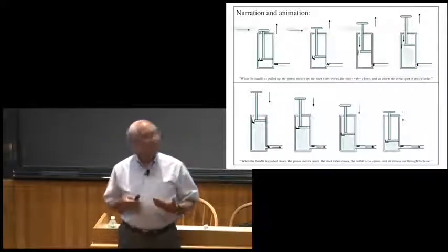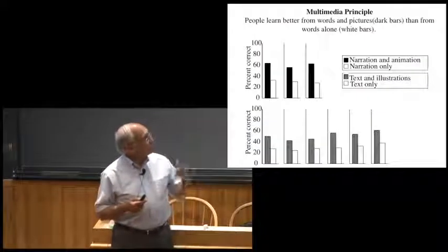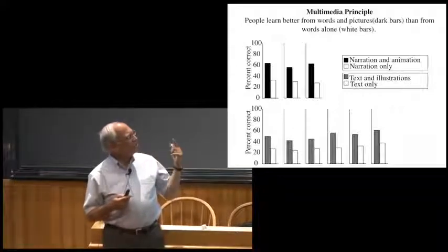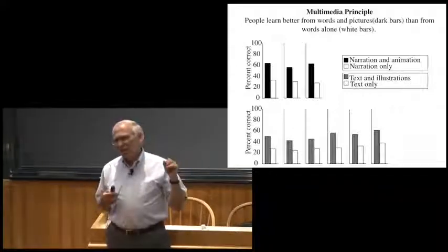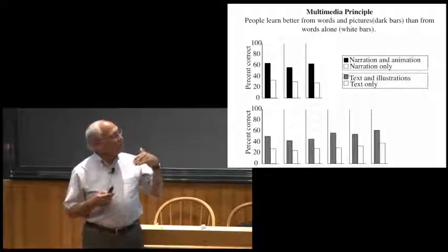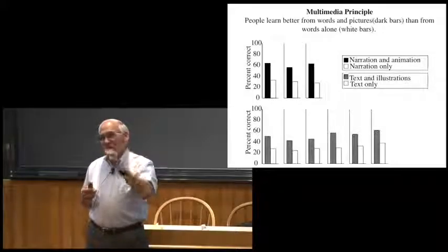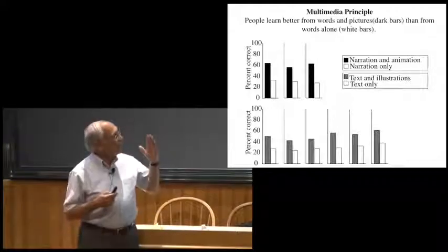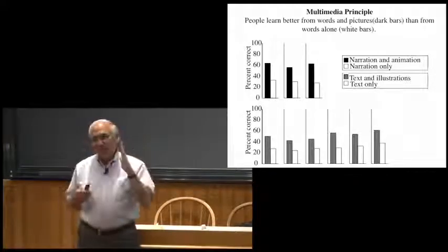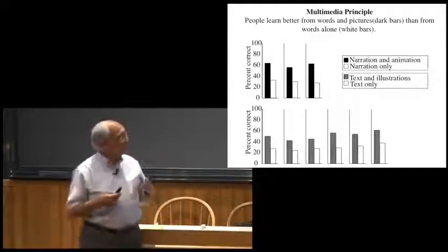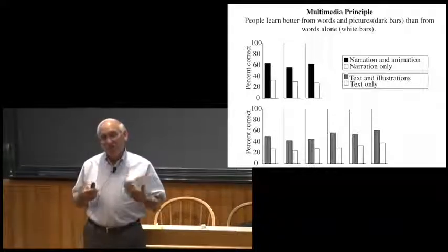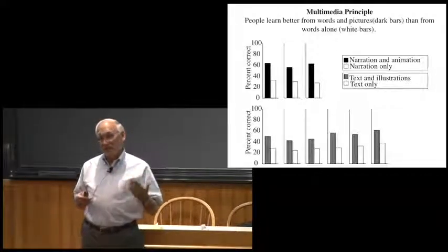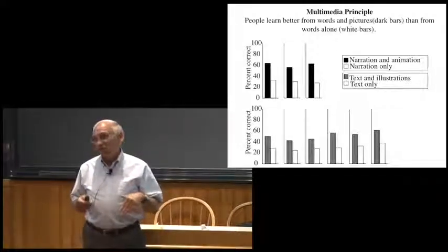This shows you the results of nine studies. The black bars are words and pictures as the presentation. The white bars are words alone. And the y-axis is the percent correct on a transfer test. You can see people are doing much better on a transfer test if they get words and pictures versus words alone.